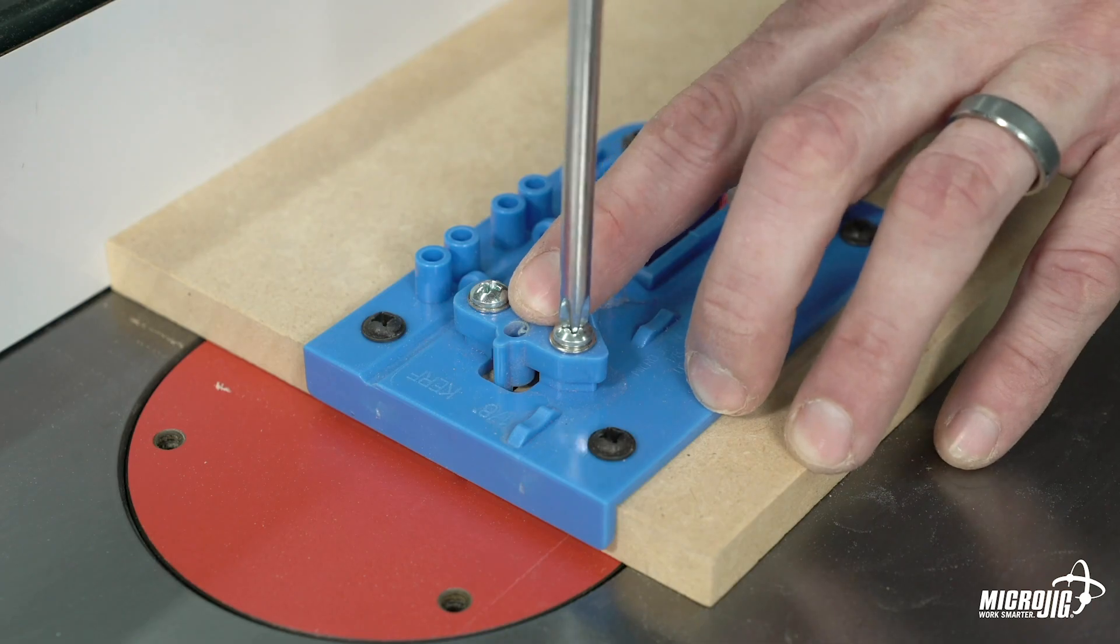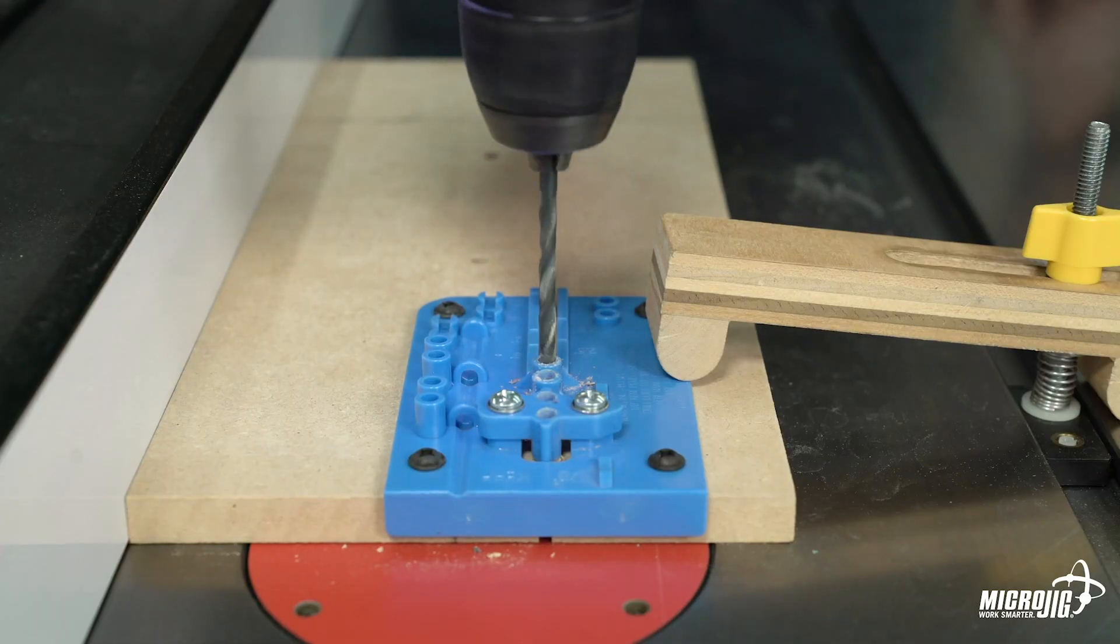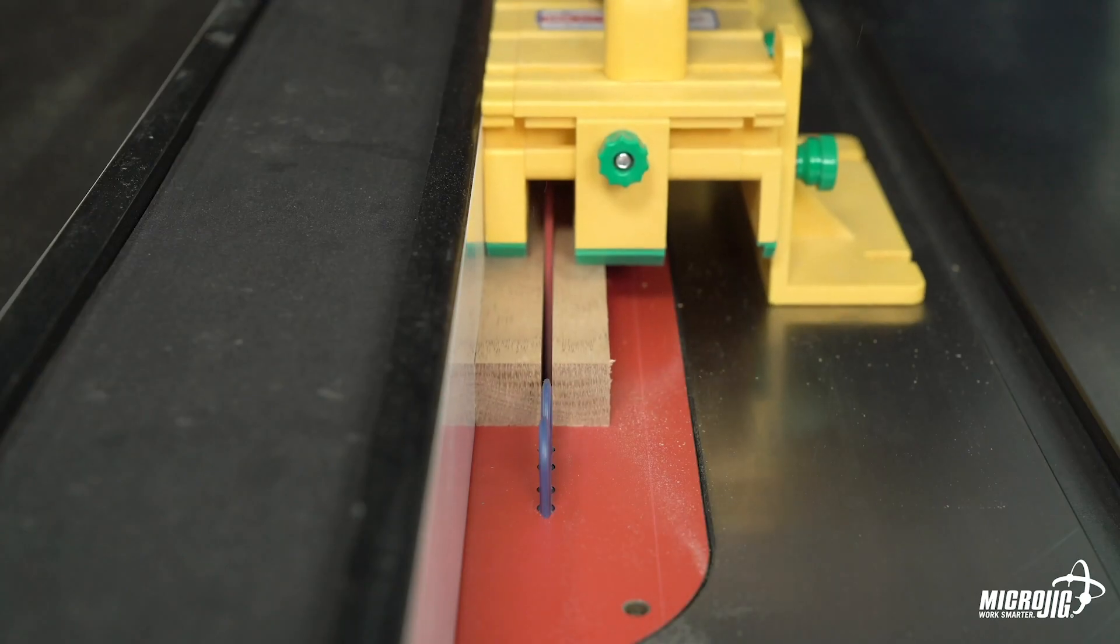MJ Splitters quickly and easily mount to your zero clearance insert, preventing the kerf from pinching on the saw blade, which is what causes kickback.